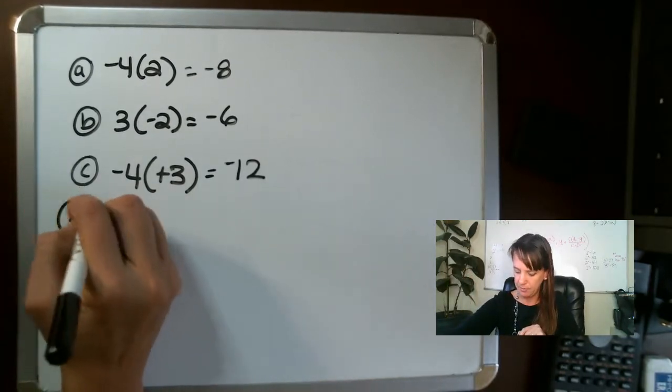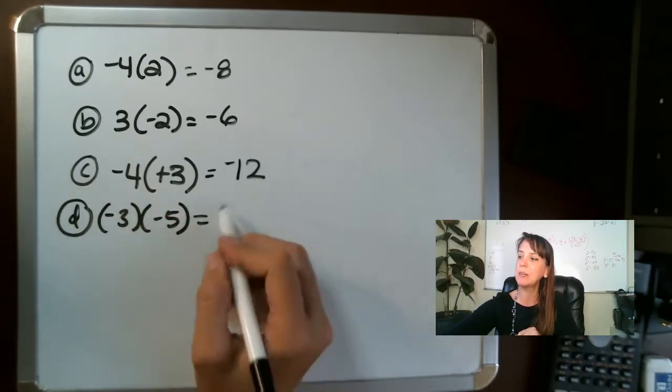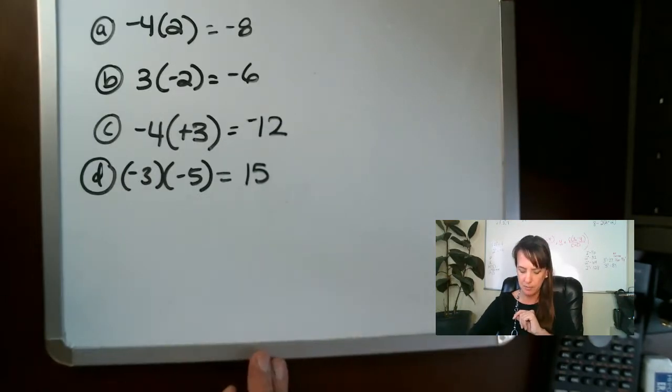So for D, we have negative three times negative five. Negative times a negative, same signs, we want it to be positive 15.